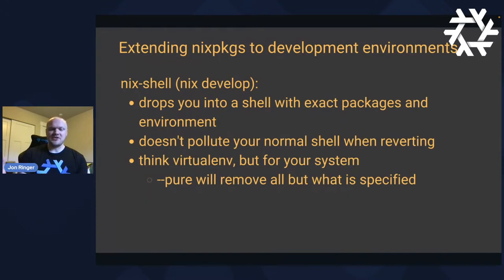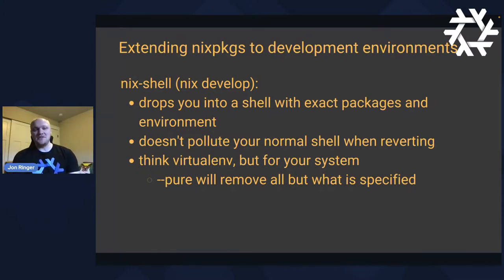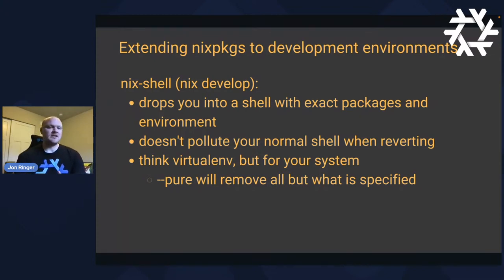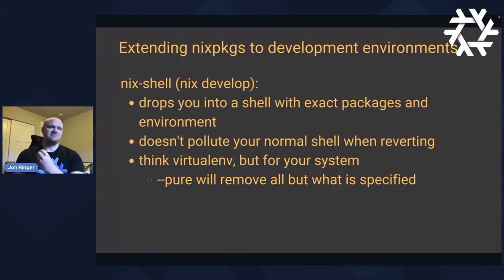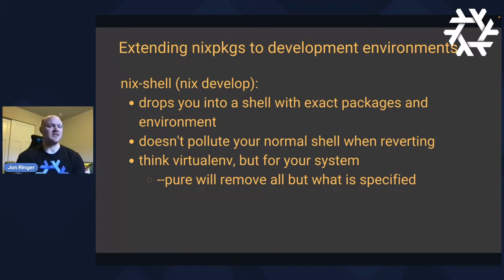My personal favorite about Nix is the nix-shell tool. If you need to try a package or need a different Go compiler version, you can just shell into that environment and use it. When you're done, you get out of that shell and it's as if it never existed. If you're familiar with Python's virtual environment, think of it as a virtualenv but for your system — for native dependencies, build dependencies, libraries. You bring them in, use them, discard them, and move on. You don't have to accumulate the cumulative debt of doing apt install or brew install.